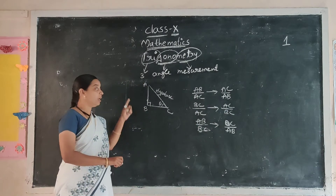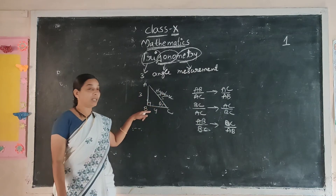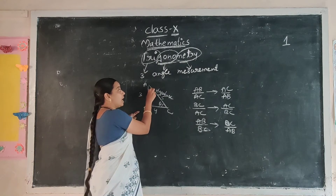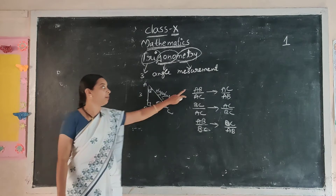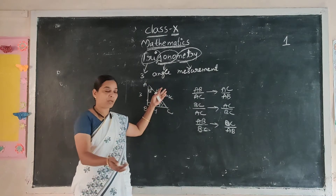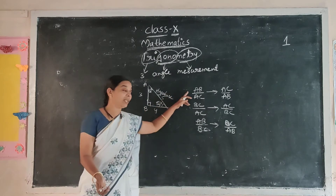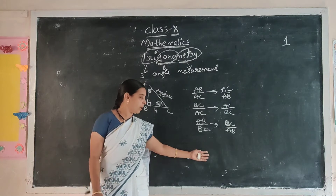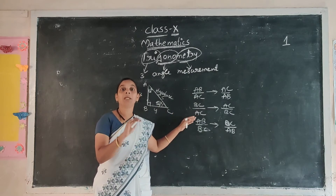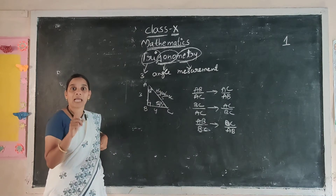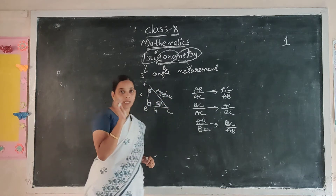Yesterday in class I explained the right angle triangle with measurements three units, four units, five units. Through these the angles inside are certain degrees. Depending on those values, the length of the sides — AB by AC, BC by AC, AB by BC — you will get some answer. But even if the triangle's side lengths are increasing, the ratio values remain the same, because the ratios of sides are constant. But they depend upon the angles. So here we notice that the angle is important.